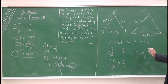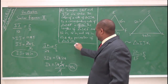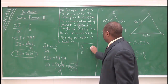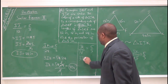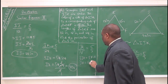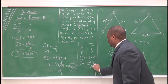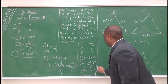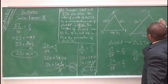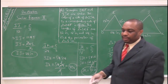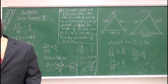Finally, finding JK: JK/EF = 5/3, so JK/18 = 5/3. Cross multiply: 3·JK = 5 × 18, so JK = 90/3 = 30 inches. We can check: 30/18 simplifies — 6 into 30 is 5, 6 into 18 is 3 — giving 5/3. Correct! Thank you so much students for listening. Have a great day.